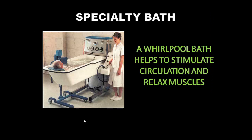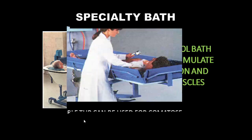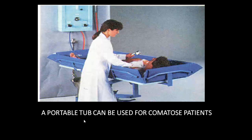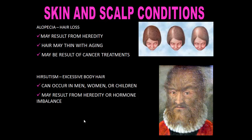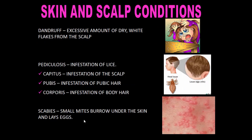Specialty bath: A whirlpool bath helps to stimulate circulation and relax muscles. A portable tub bath can be used for comatose patients. Skin and scalp conditions include: alopecia — hair loss that may result from heredity, aging, or cancer treatment; hirsutism — excessive body hair that can occur in men, women, or children, and may result from hereditary factors or hormone imbalance; dandruff — excessive dry white flakes from the scalp; pediculosis — infestation of lice of the scalp, pubic hair, or body hair; and scabies — small mites that burrow under the skin.